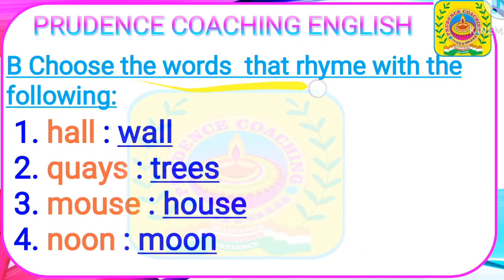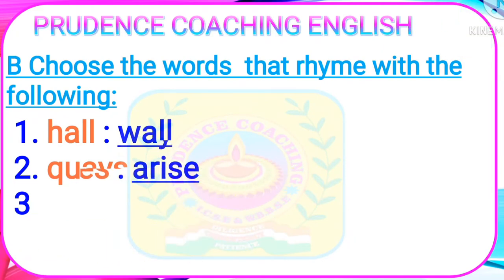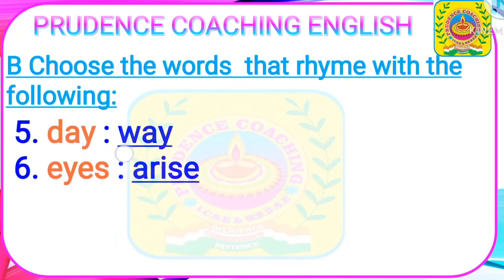Next, choose the words that rhyme with the following — we need to rhyme each word with another word. Hall — wall. Keys — trees. Mouse — house. Noon — moon. Day — way. Eyes — arise.